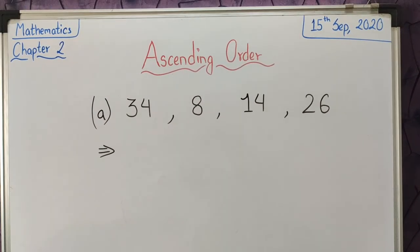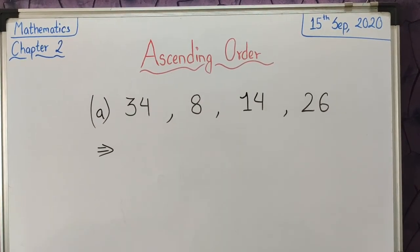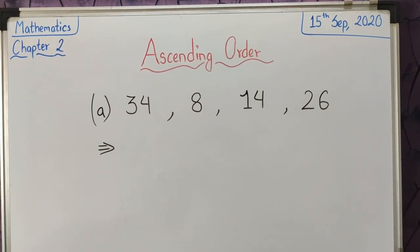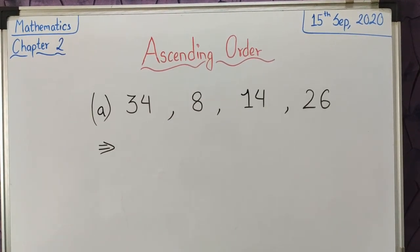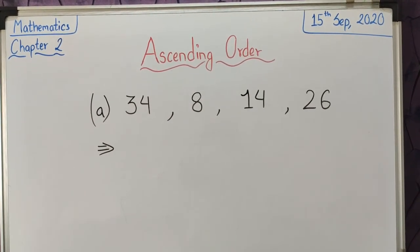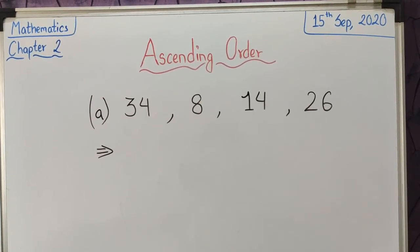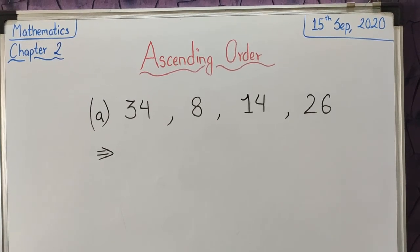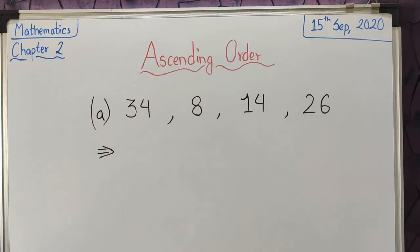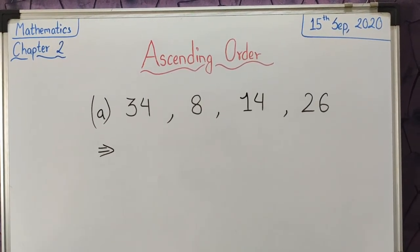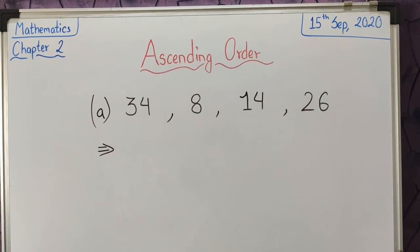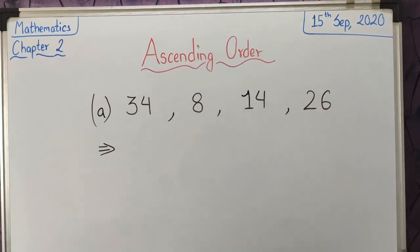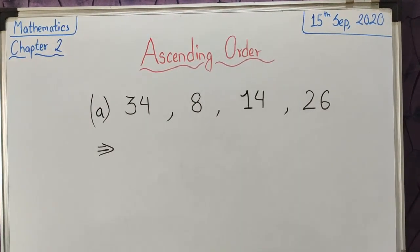I believe you all remember ascending order and descending order. So what is ascending order? Ascending order means arranging the numbers from the smallest number to the biggest number.